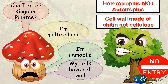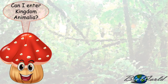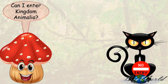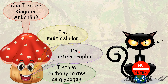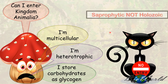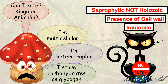So can it enter kingdom animalia, considering that it is multicellular, heterotrophic, and stores carbohydrates in the form of glycogen, just like animals? Turns out no — because although it is heterotrophic, it uses saprophytic nutrition, not holozoic nutrition. Holozoic nutrition is when we ingest or eat food. Besides that, the cells of kingdom fungi have a cell wall, whereas cells of kingdom animalia do not have a cell wall, and of course the fact that fungi is immobile.